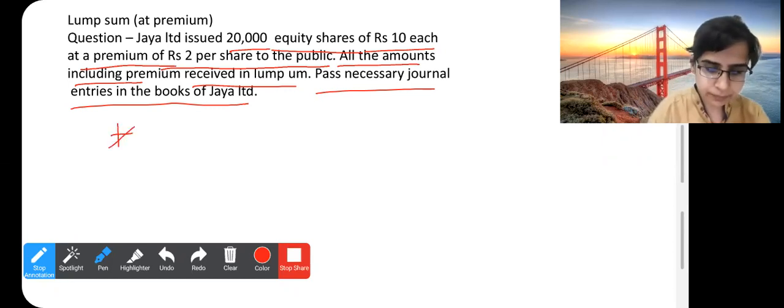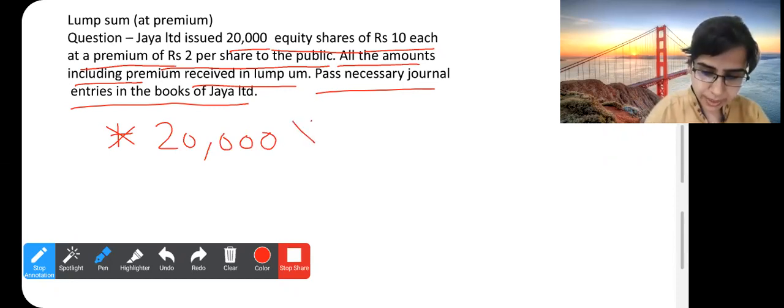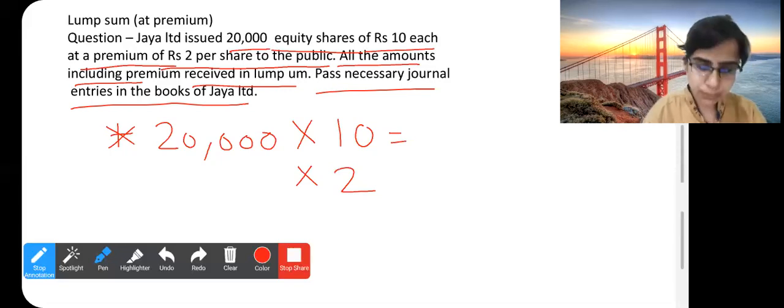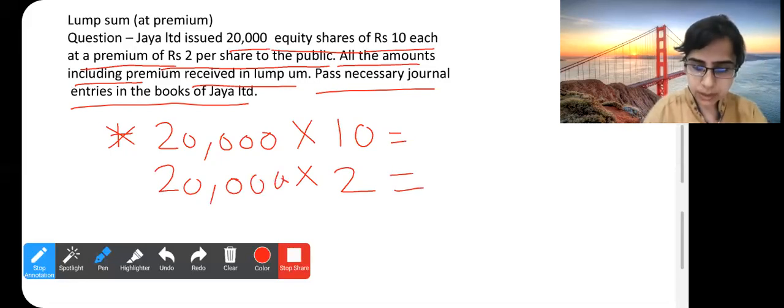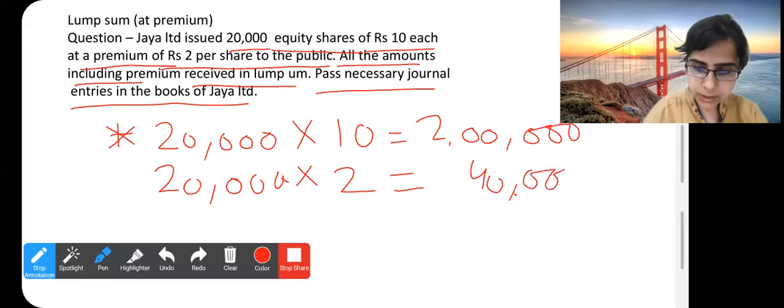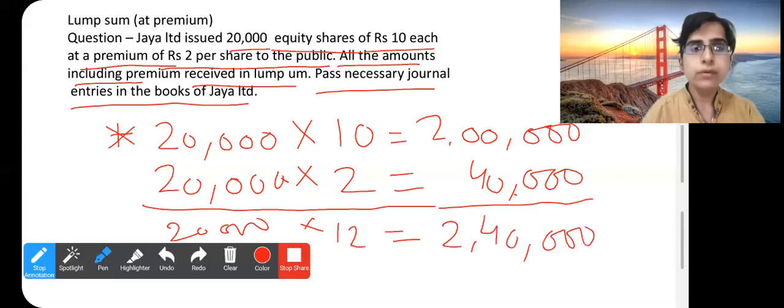What are the key points? Here we have 20,000 shares which face value is actually 10. And we have a premium amount of 2 rupees per share. The company will receive 20,000 into 10 which is 2 lakh, this is the capital amount. And 40,000 is the premium amount. This way, company will receive 2 lakh 40,000.